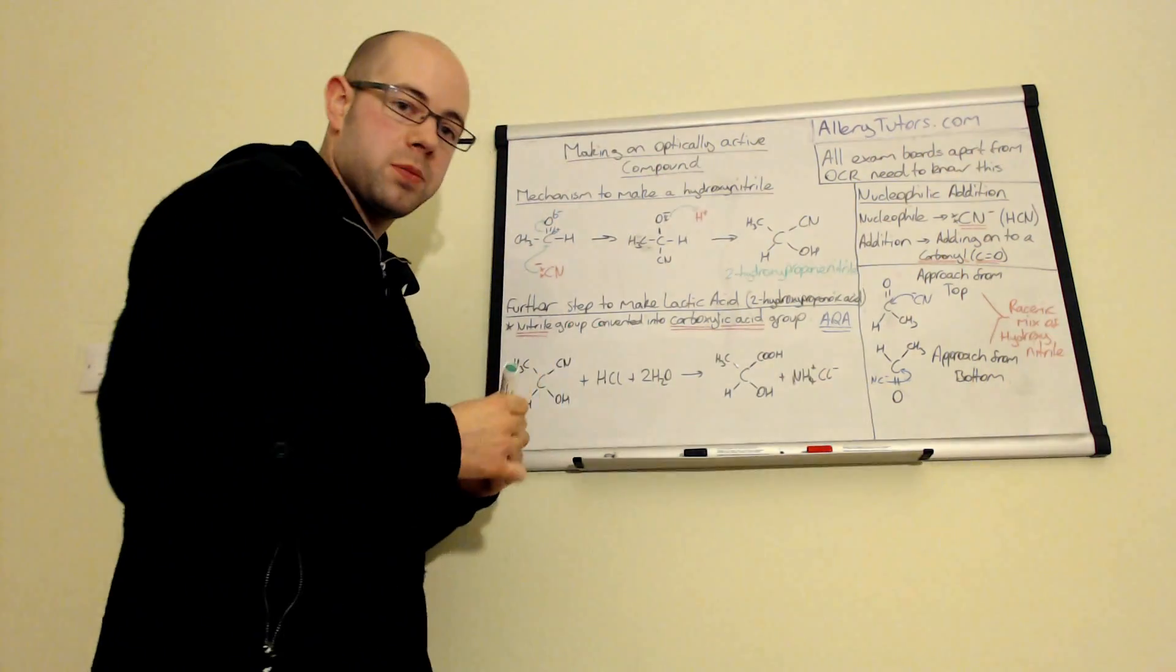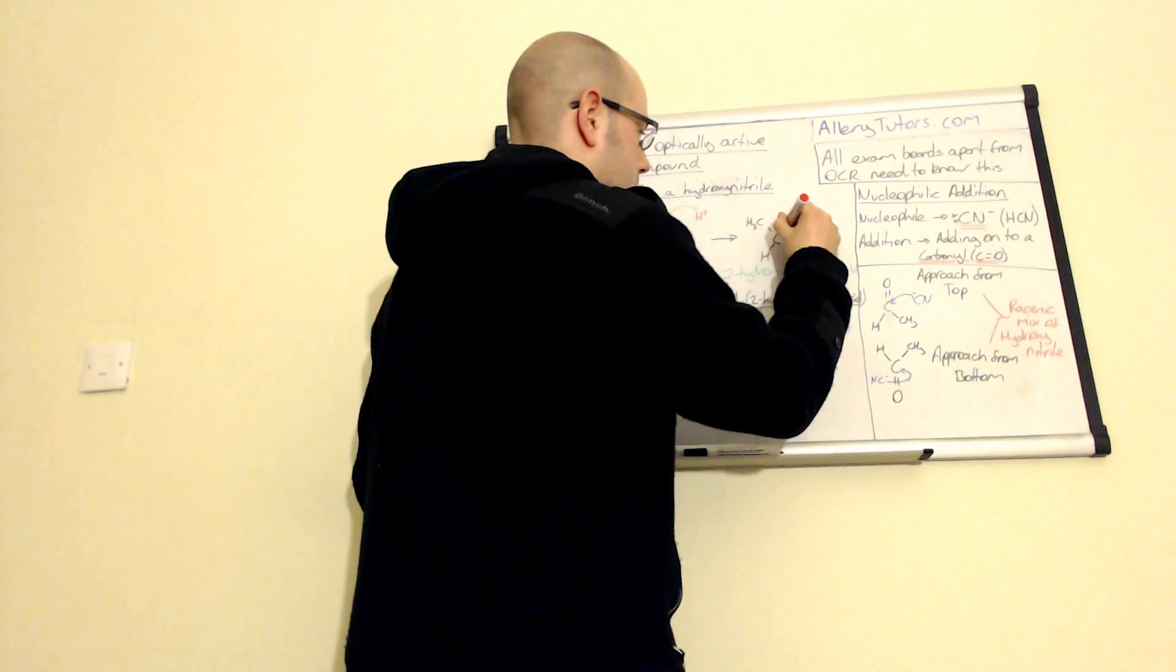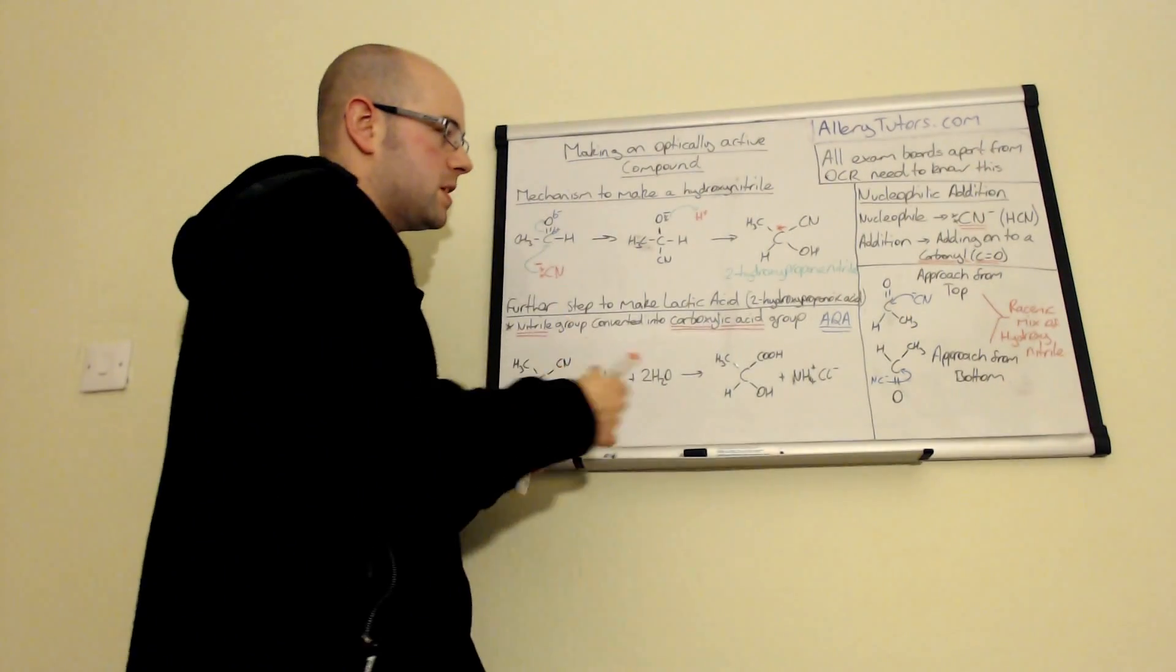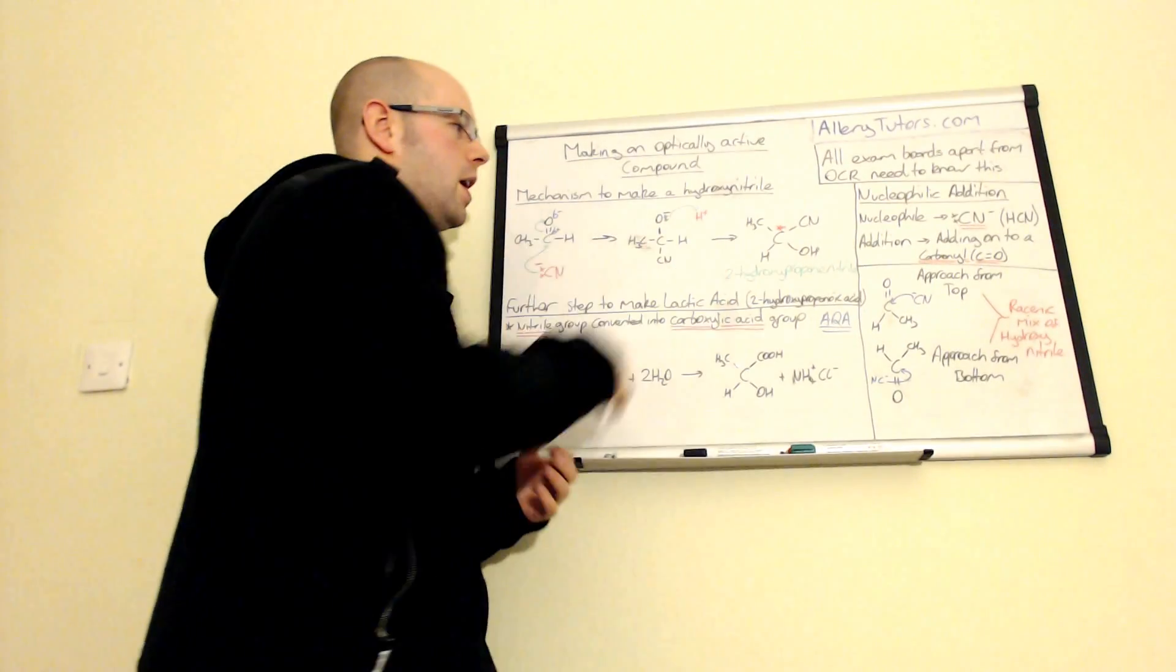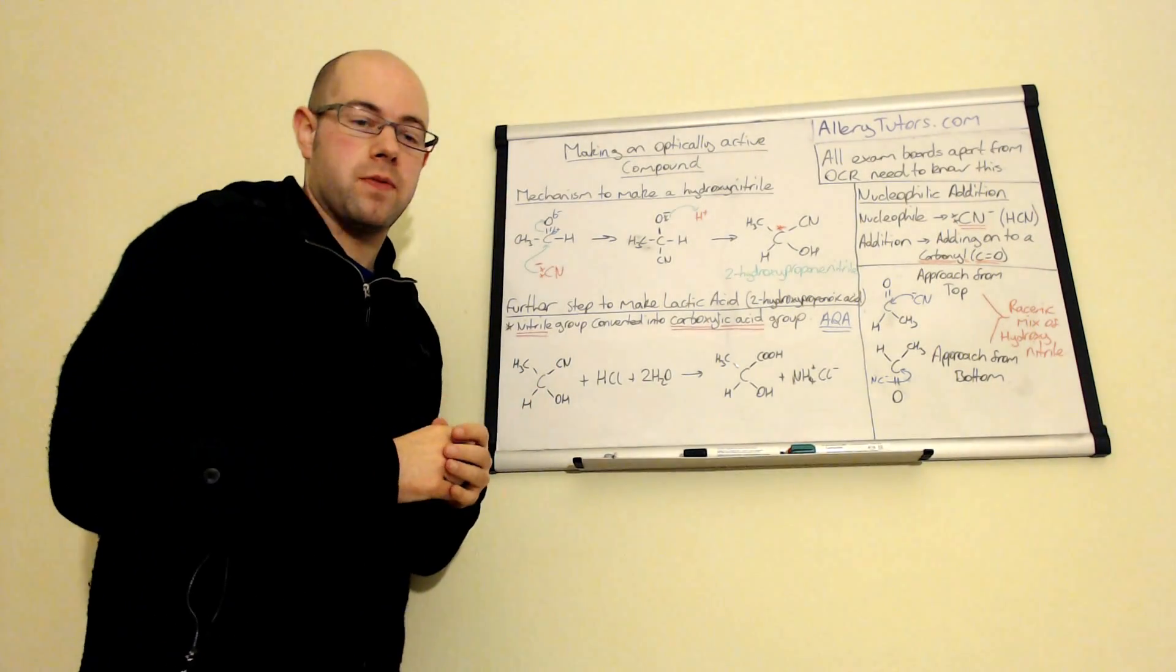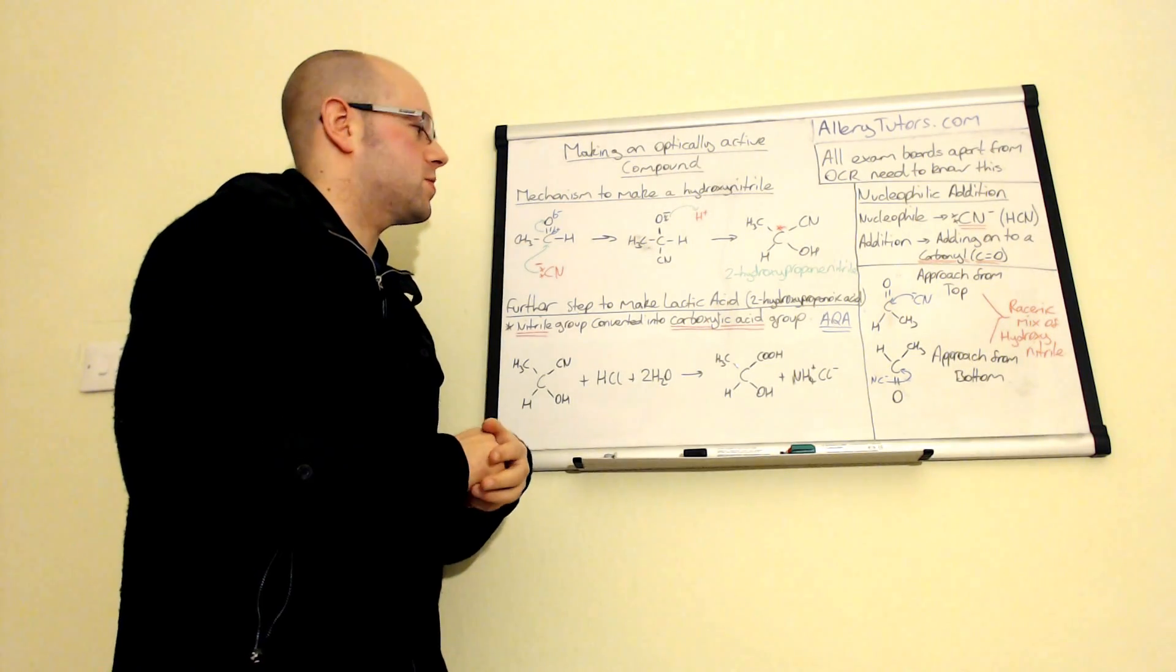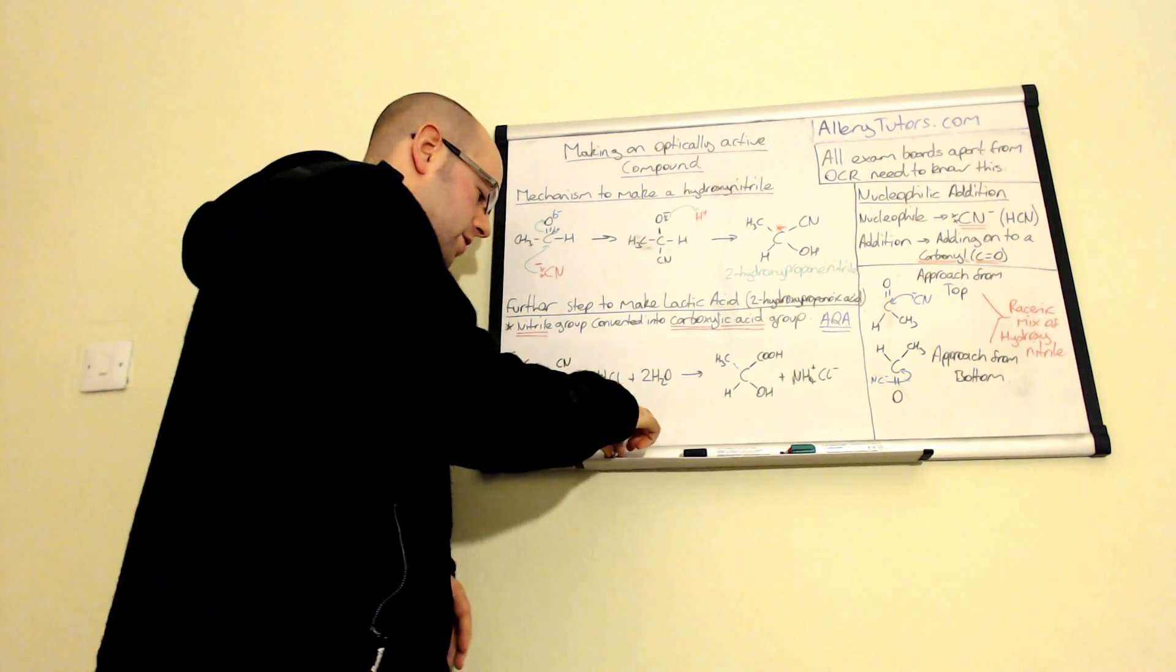Now this is optically active. It has a chiral center. And there it is there on the carbon. So this means that this will actually have a mirror image of itself. And the mirror image obviously depends on which way the cyanide attacks. And I've got a model to try and illustrate this.